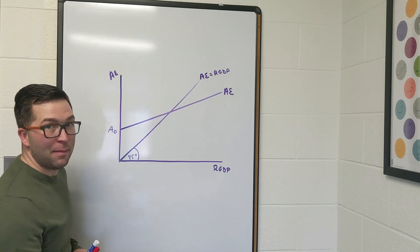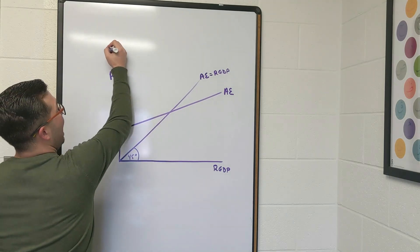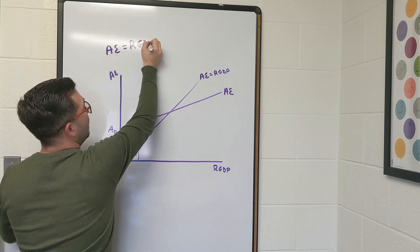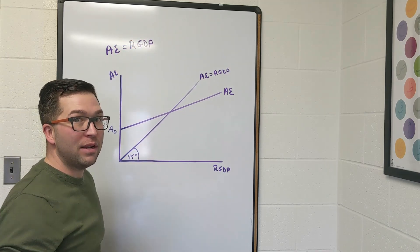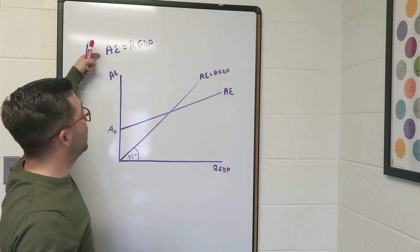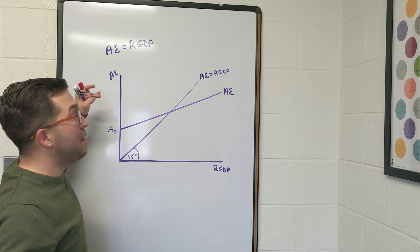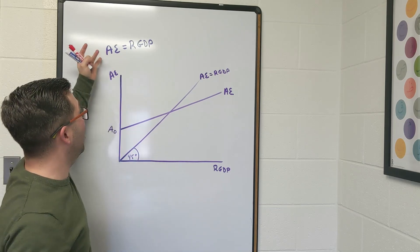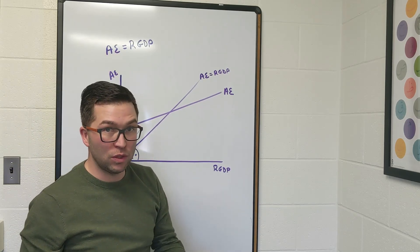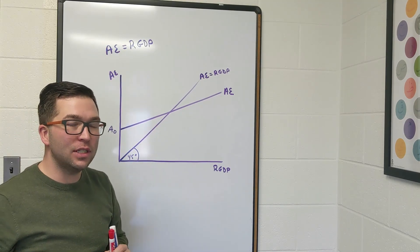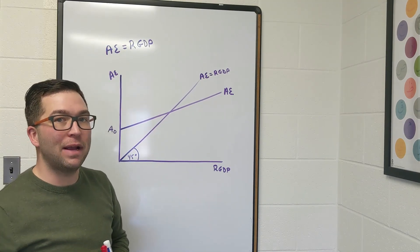Recall that the macroeconomic equilibrium is when aggregate expenditure is equal to real GDP. As I mentioned in a previous video, this is a condition, a single point where that holds true. This isn't an equality saying aggregate expenditure is always equal to real GDP, it's just saying when it is, during that condition, is when we're in the macroeconomic equilibrium.